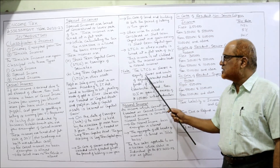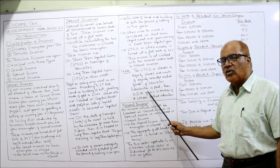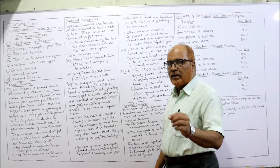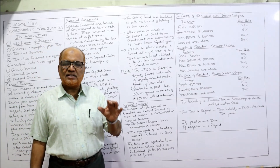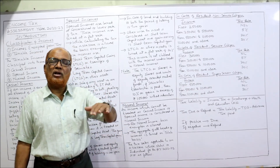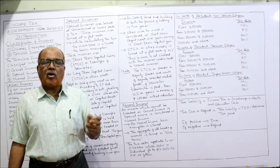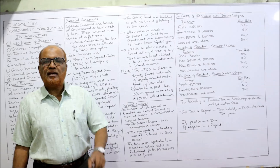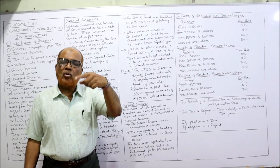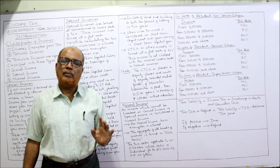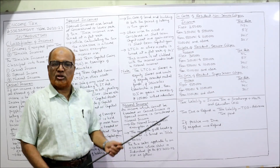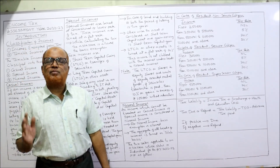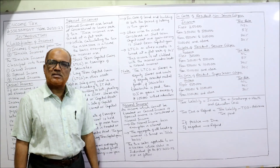One exception: LTCG on equity shares and units of equity-oriented mutual funds. If Securities Transaction Tax (STT) has been paid, then gains up to 1 lakh rupees are exempt from tax. Gains in excess of 1 lakh rupees are taxed at a flat rate of 10% without indexation. I will explain indexation while dealing with the capital gains chapter.